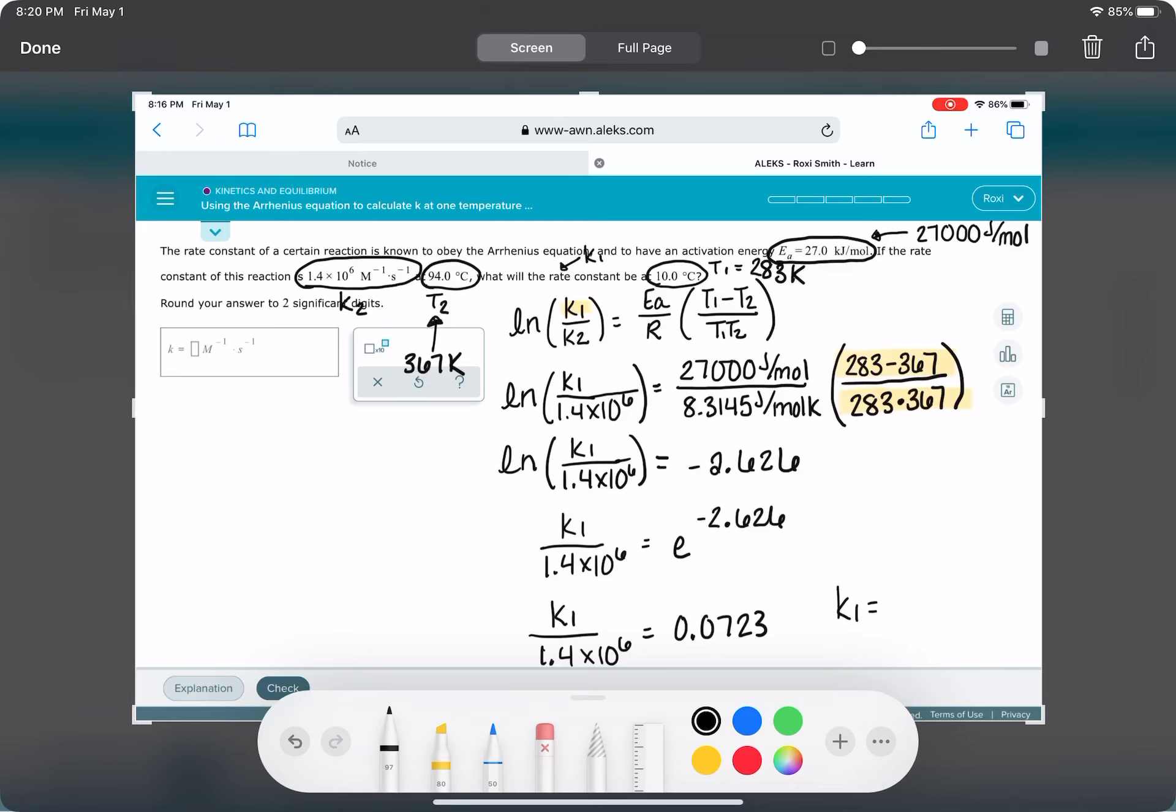And you should think when you're doing this about whether or not your number is going to make sense. So the K1 that we're getting is 1.01 times 10 to the 5.